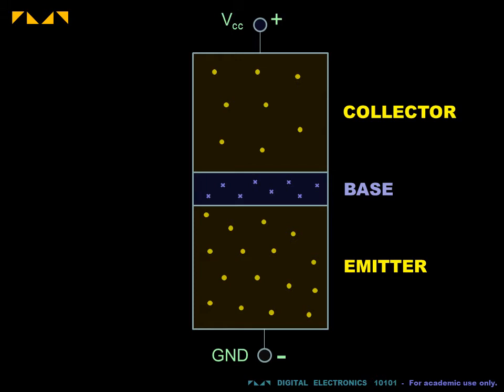This external voltage will try to drive electrons from the emitter to the collector. This motion is blocked at the emitter base junction for two reasons.